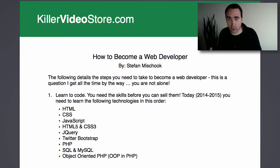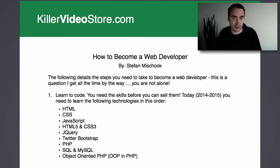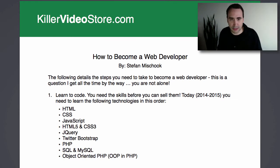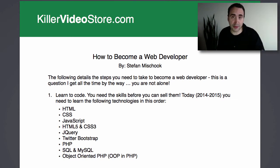Right after that, you have jQuery. jQuery is the de facto standard JavaScript library — basically a collection of stuff that allows you to do all kinds of things, like drop-down menus and much more. I'm not here to give you a big description of all these technologies, just a brief understanding of what you should learn. jQuery is huge — it's used everywhere.